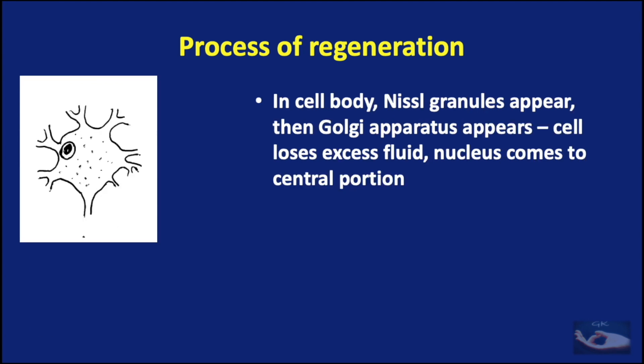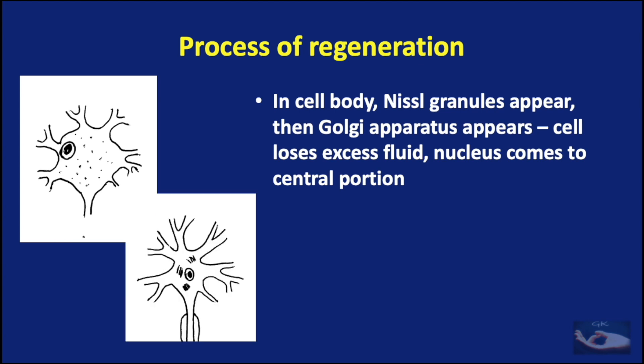At the same time, in the cell body, the Nissl granules reappear, then the Golgi apparatus appears. The cell loses the excess fluid that had accumulated during chromatolysis, and the nucleus that had moved to the periphery returns to the central portion.